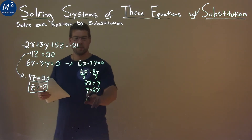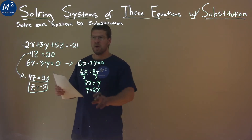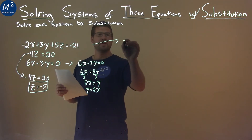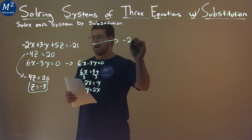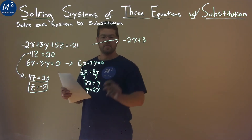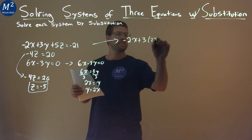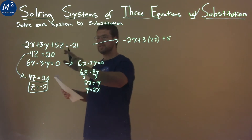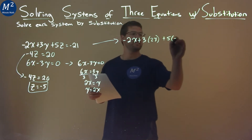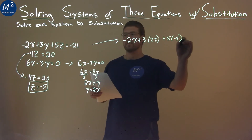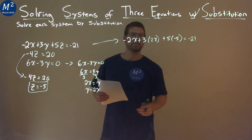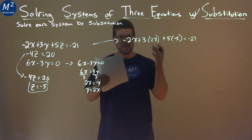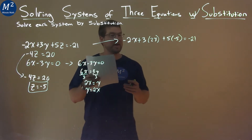With both these pieces of information, I take my first equation: negative 2x plus 3, and instead of y I put 2x in. Then we have plus 5, and instead of z I put negative 5 in. That equals negative 21. Now I have an equation with only one variable, x, and I can solve it.